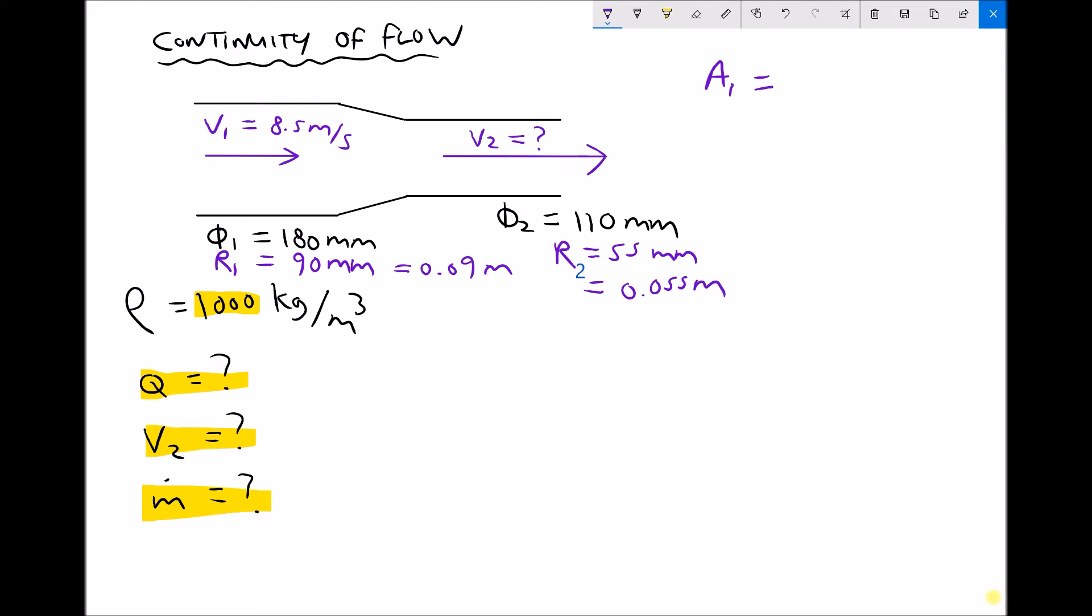Area one then for a circular duct is π R². π times 0.09 squared which gives us an inlet area of 0.025447 meters squared, and that's to six decimal places. I'm going to work to six decimal places and express my final answer to four decimal places.